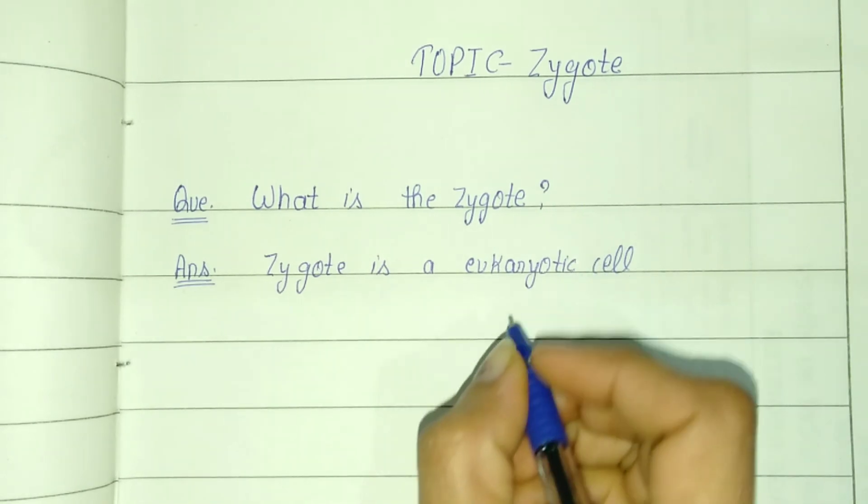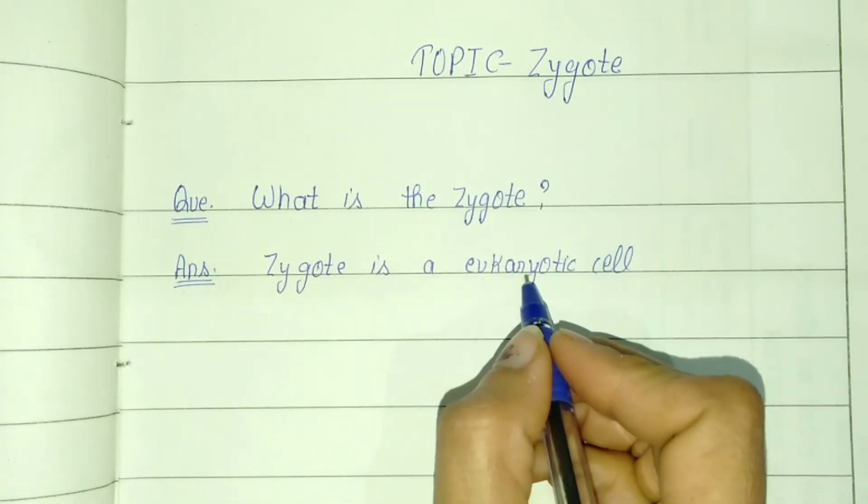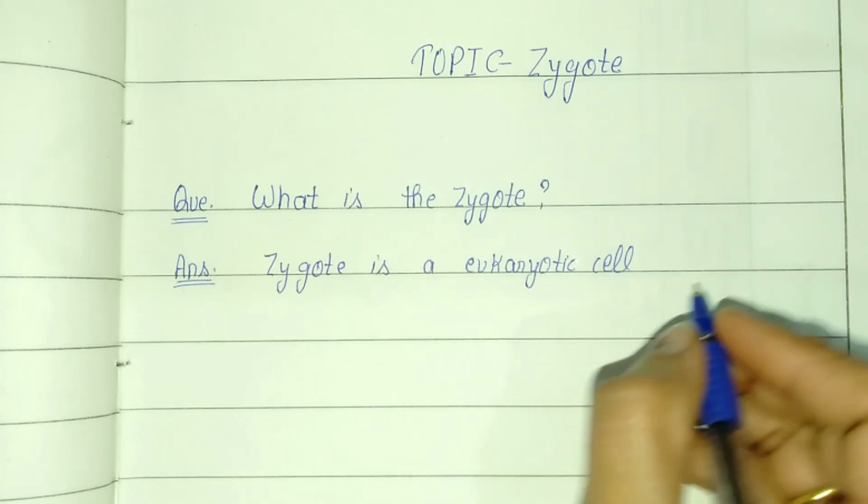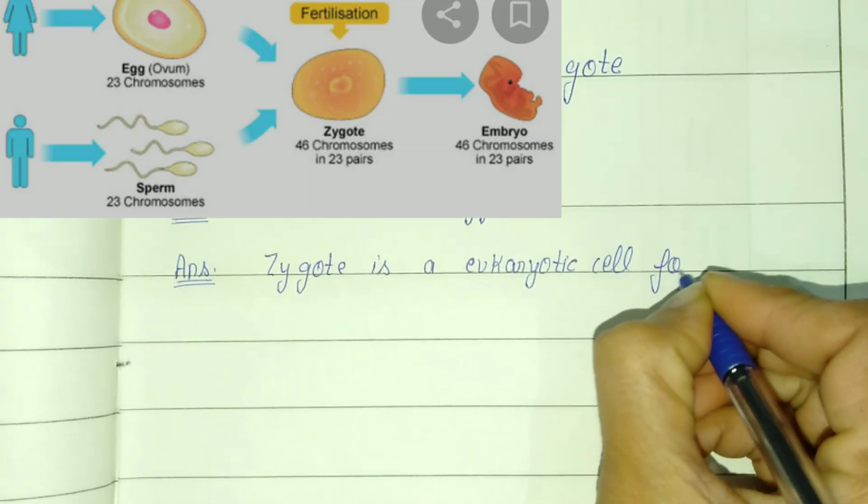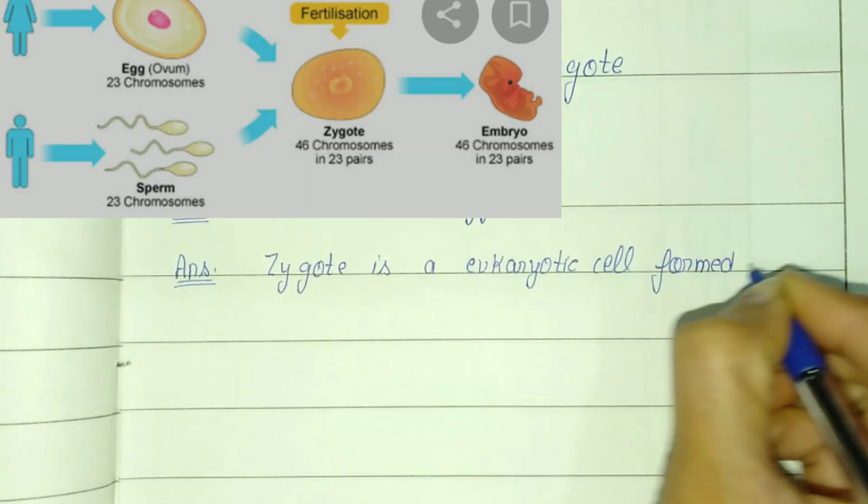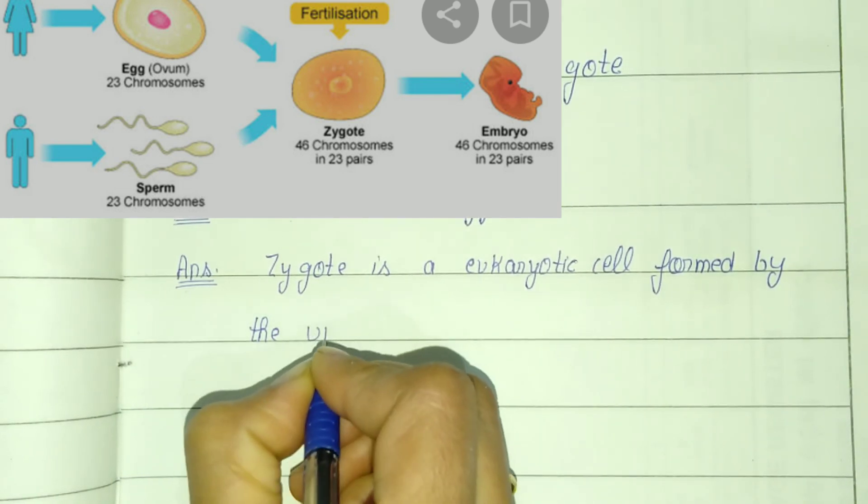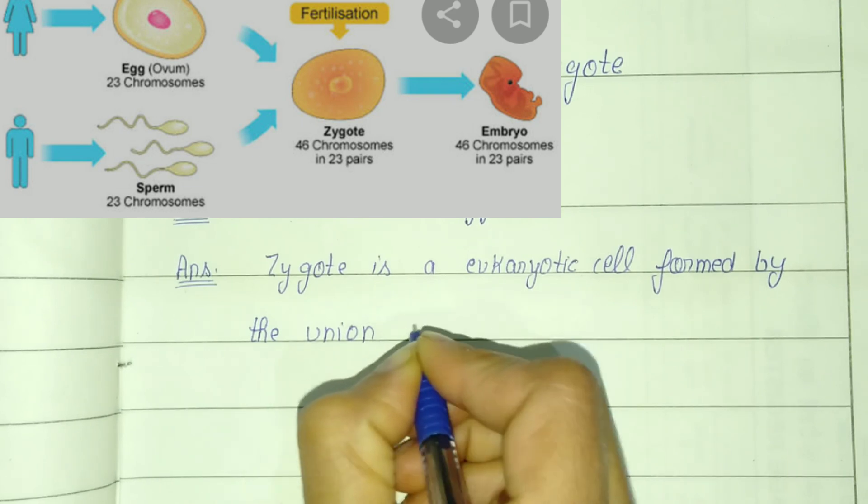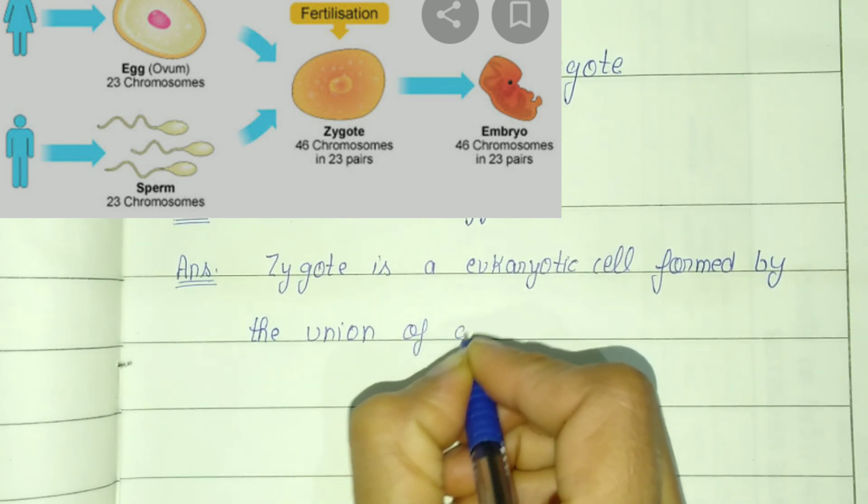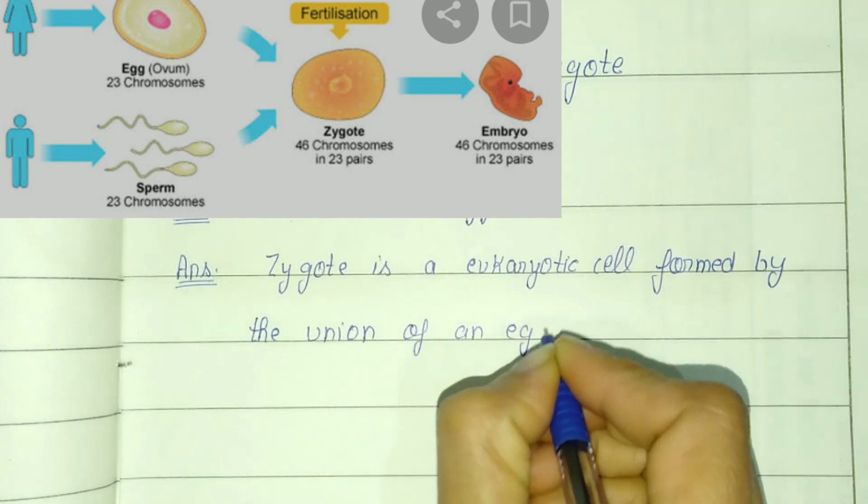Eukaryotic means nucleus well developed in the eukaryotic cell and formed by the union of an egg cell.